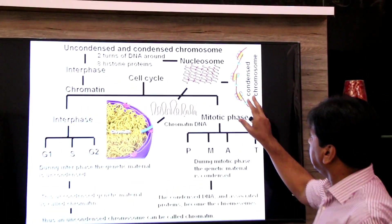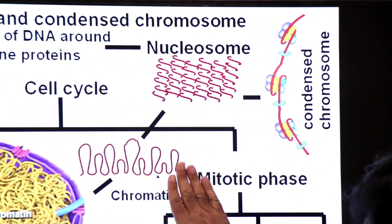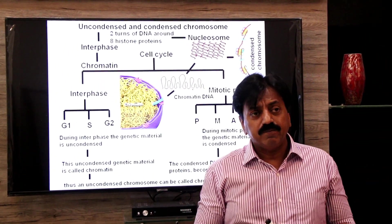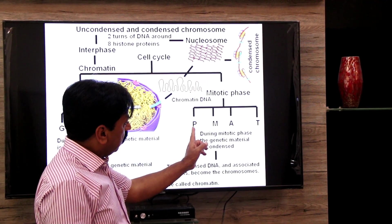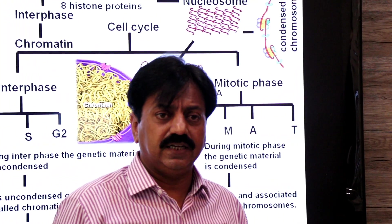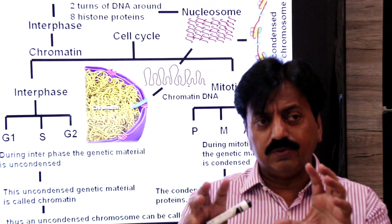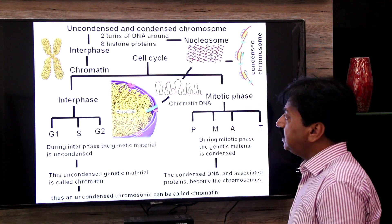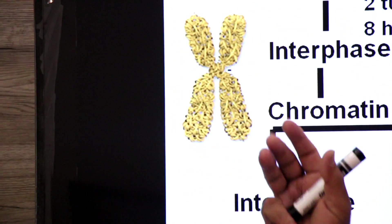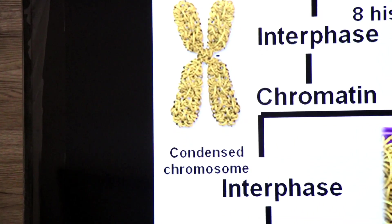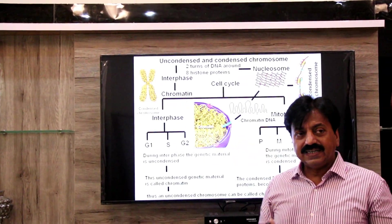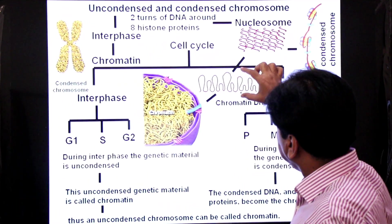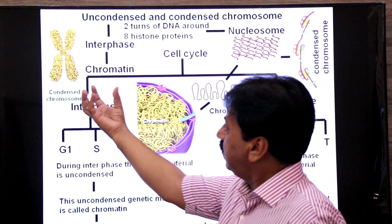Now this is called a condensed chromosome. Here you can see it condensed, but still it is less condensed. This is called the condensed chromosome — here you can see less condensed, here you can see chromatin, and here you can see it fully condensed.